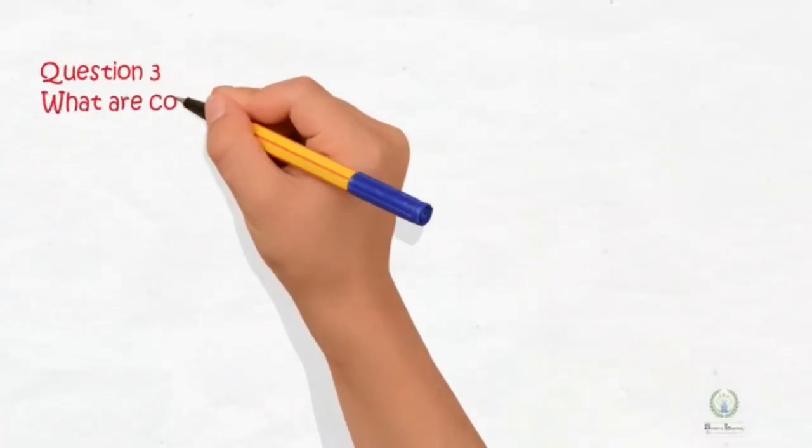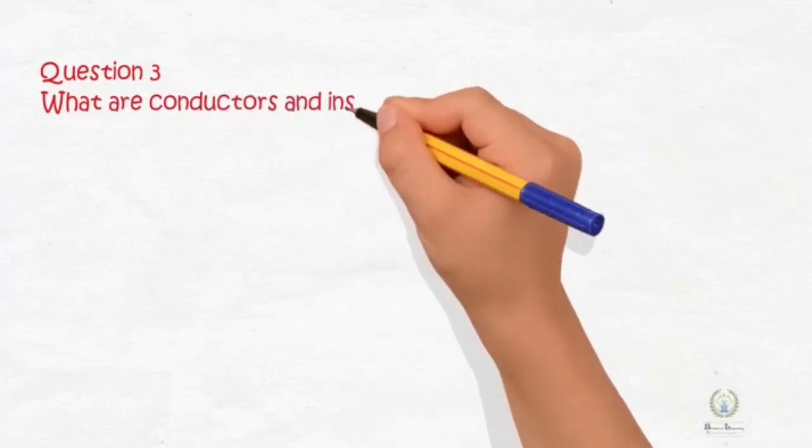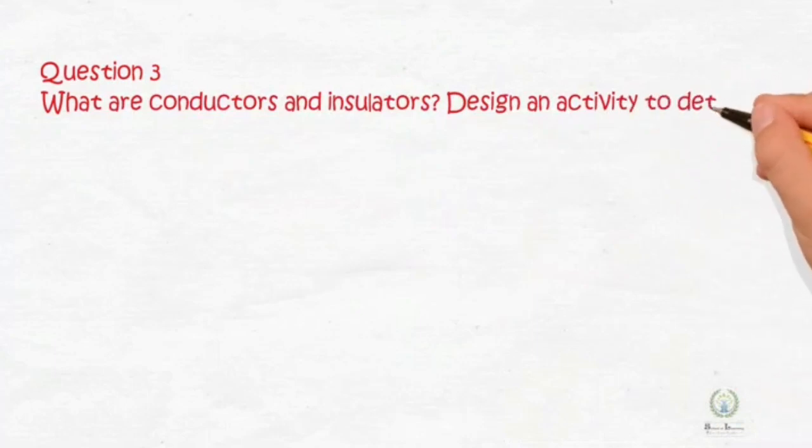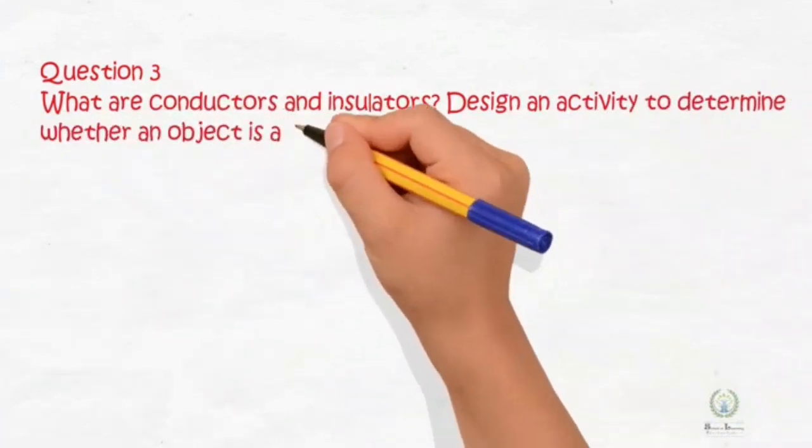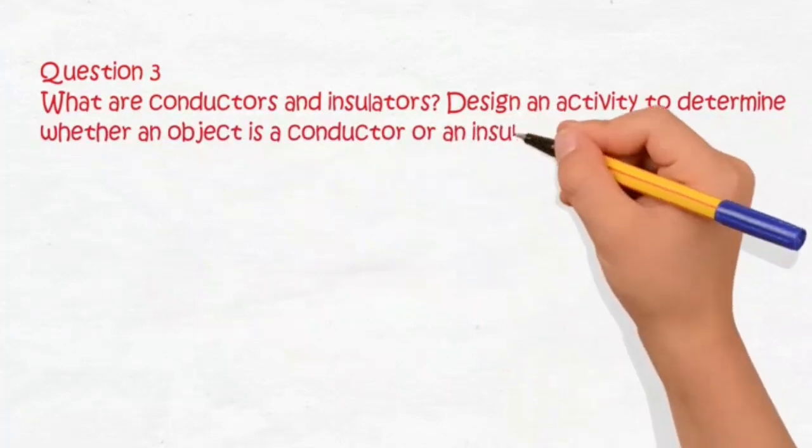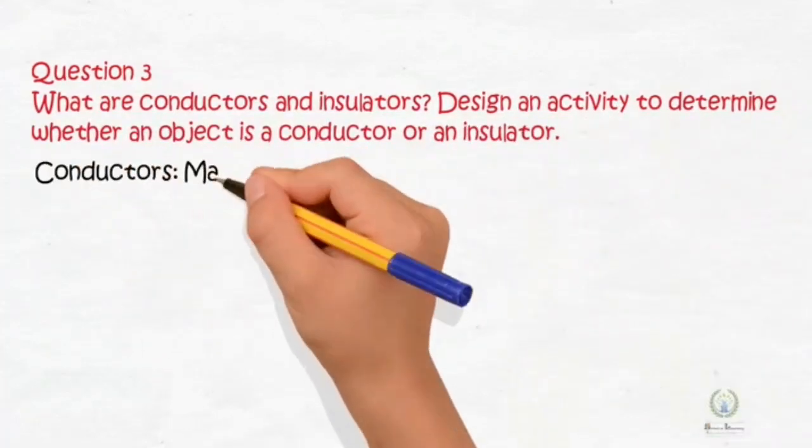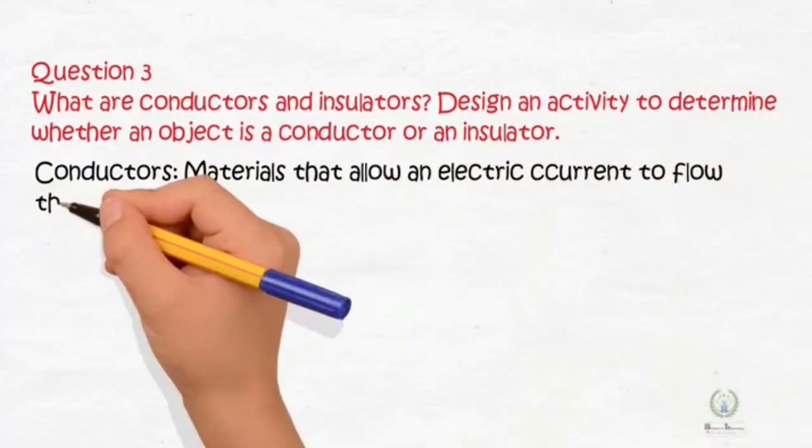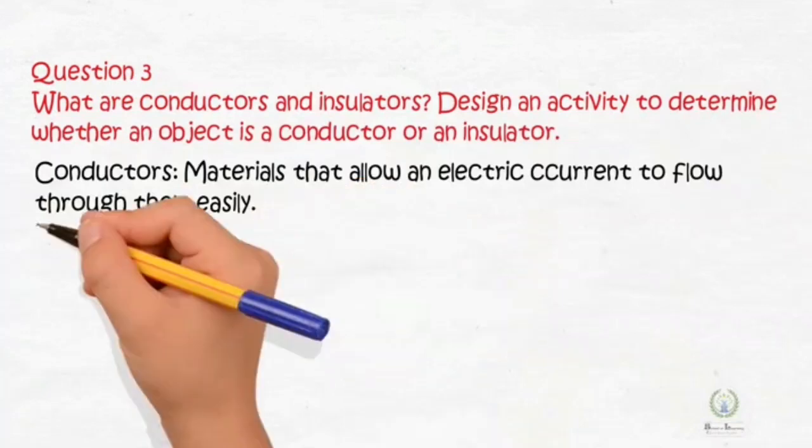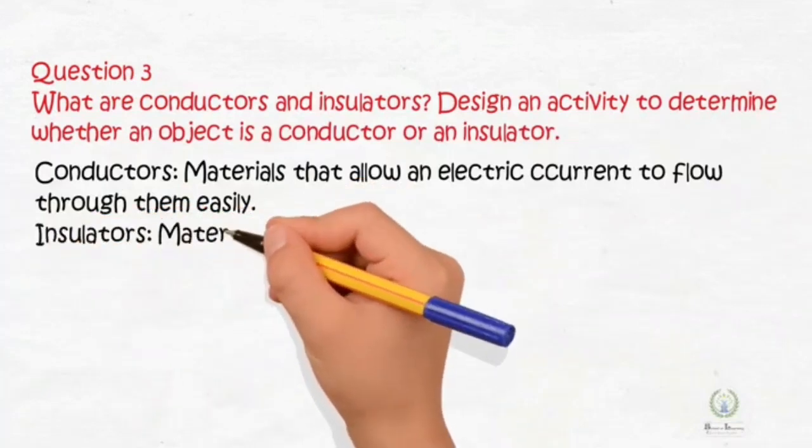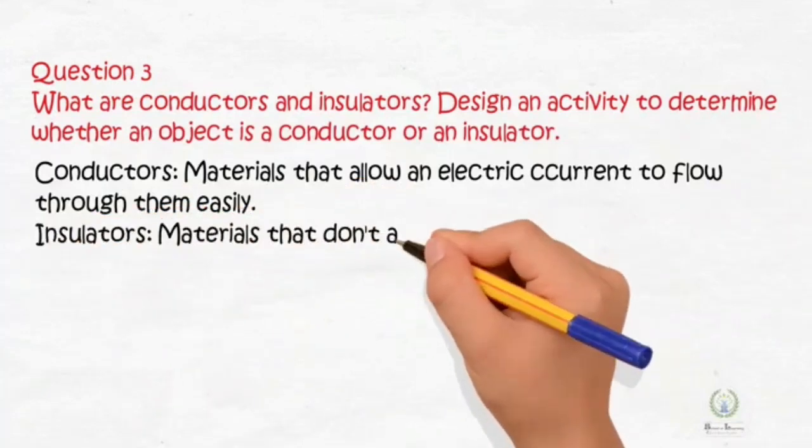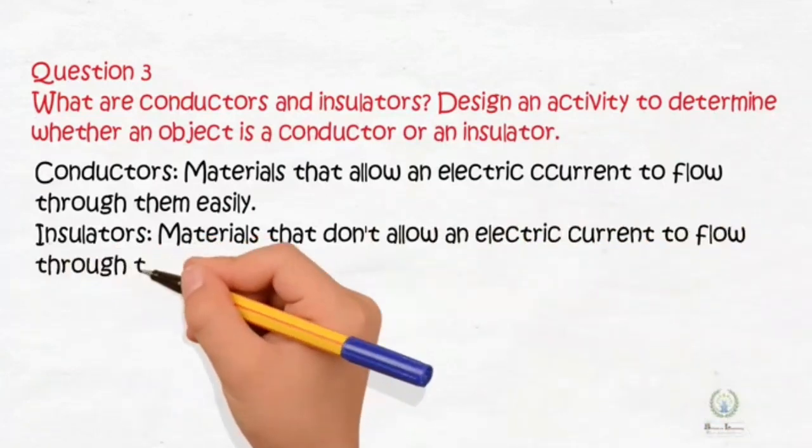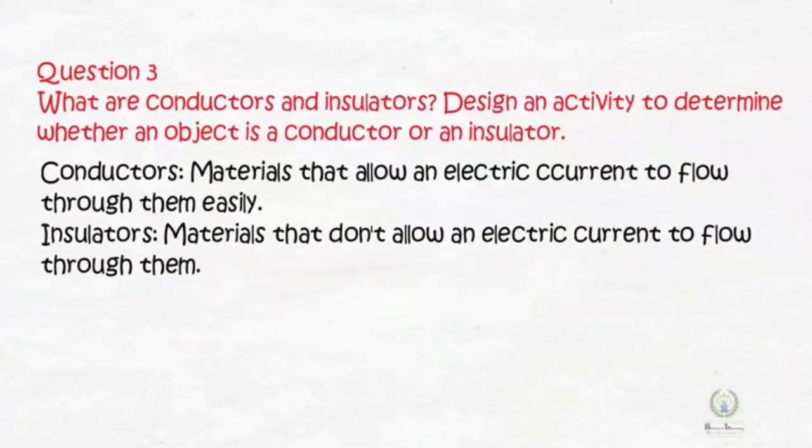Question number three: what are conductors and insulators? Design an activity to determine whether an object is a conductor or an insulator. Conductors: materials that allow an electric current to flow through them easily are called conductors. Insulators: materials that don't allow an electric current to flow through them are called insulators.